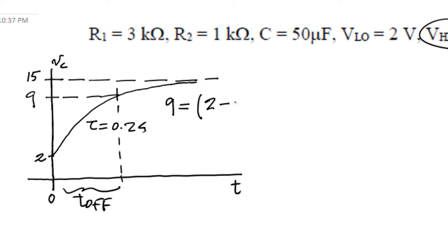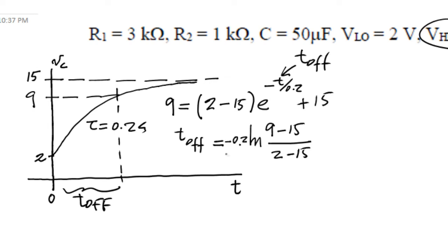times e to the negative T, divided by the time constant, plus the final value. There is only one unknown, this one T, which is no other than T-OFF. And we solve for T-OFF. T-OFF is 154.6 milliseconds, which is the first of the two parts of this question. Let's move on to the second part.